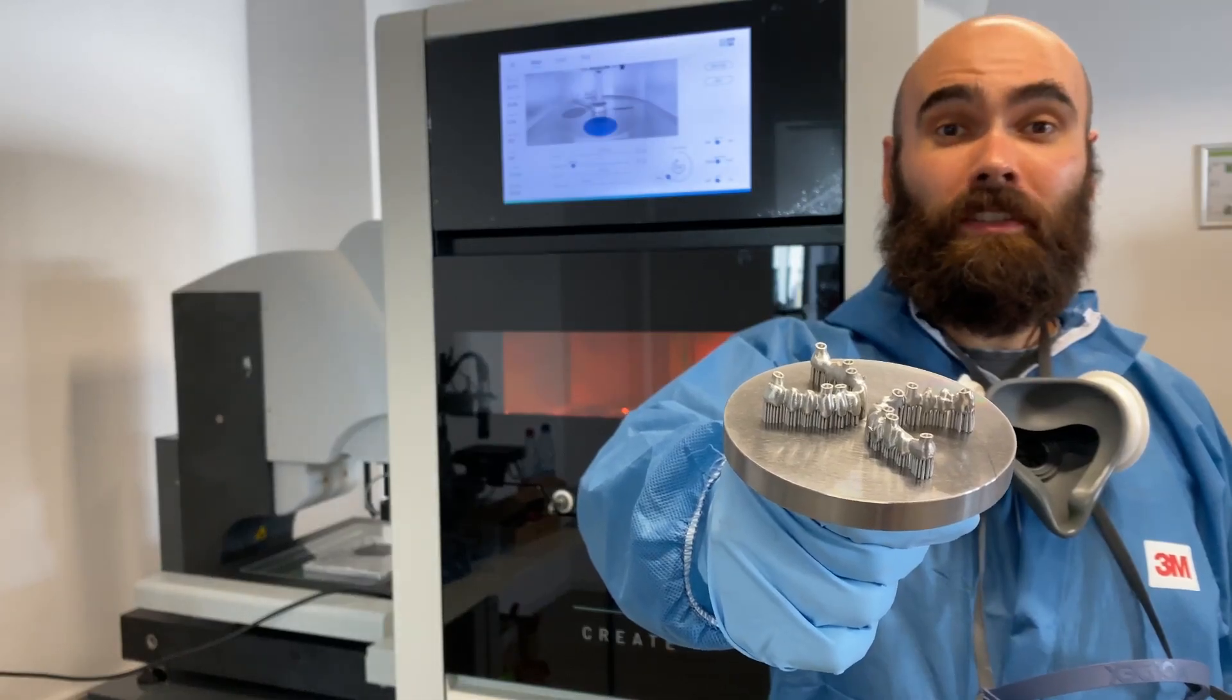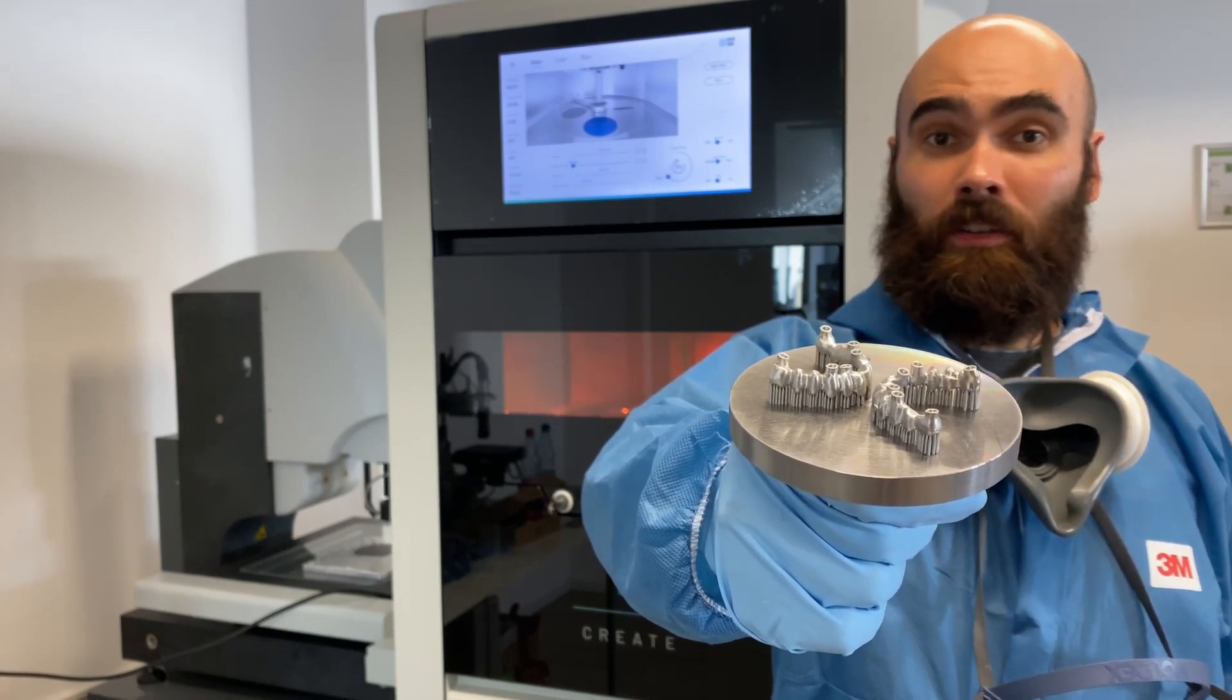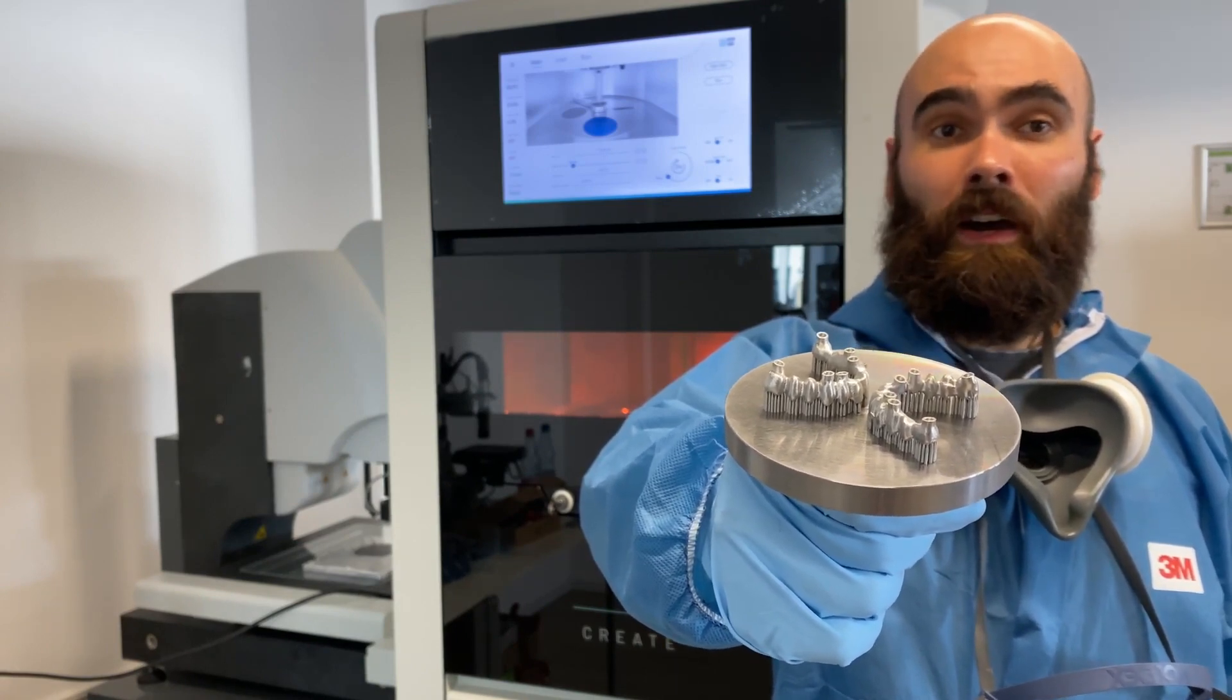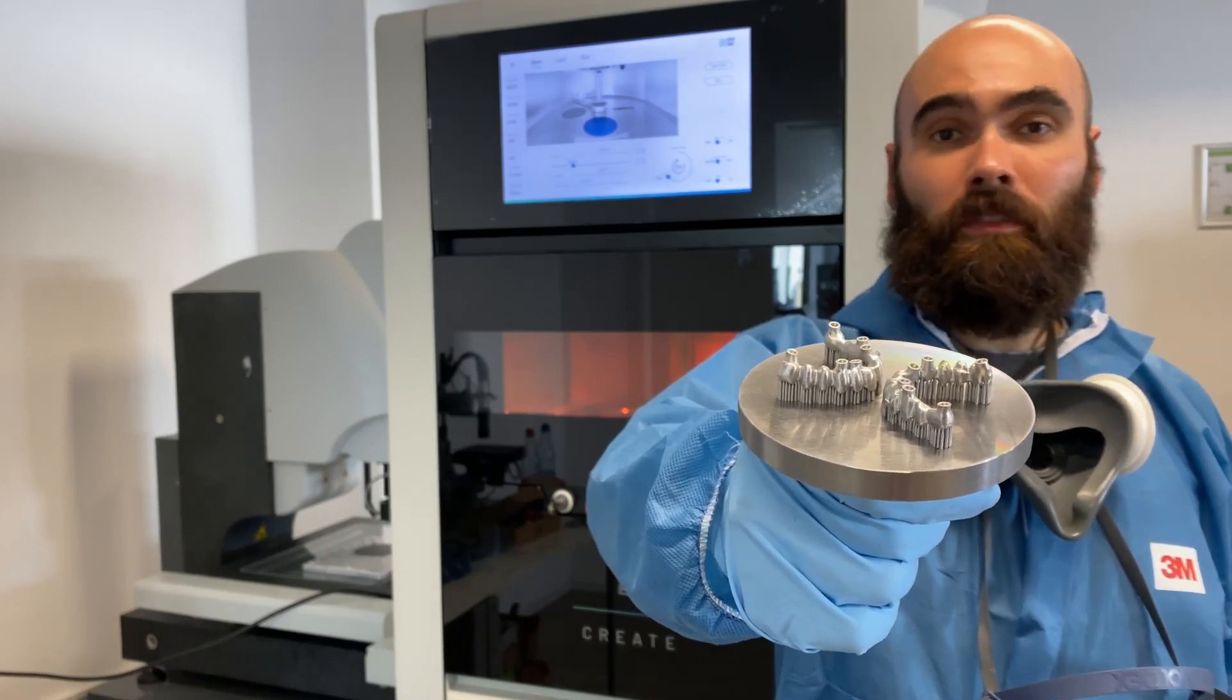Now that our part is printed, we can start with the post-processing, which includes the heat treatment in the oven and cutting down the parts with the supports with the bandsaw and remove the supports.